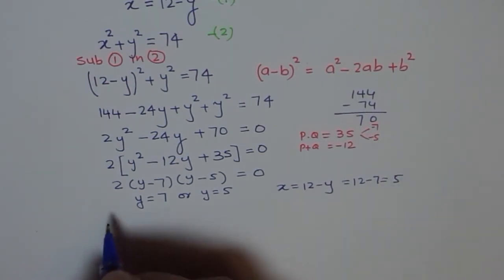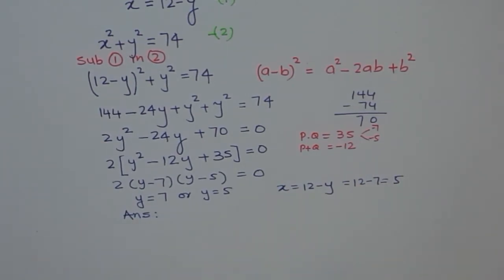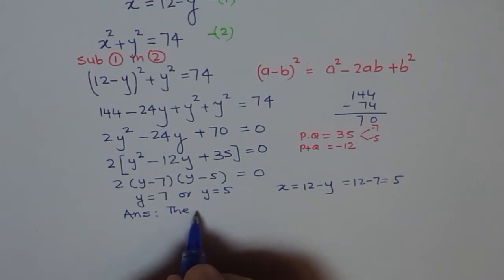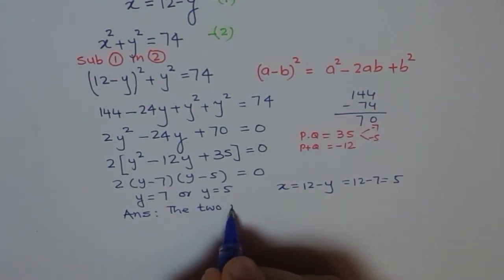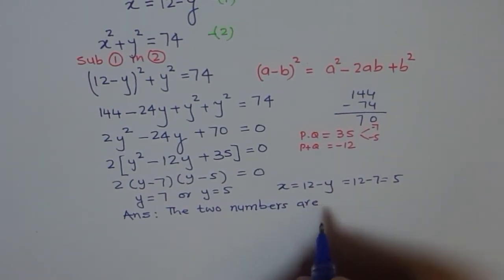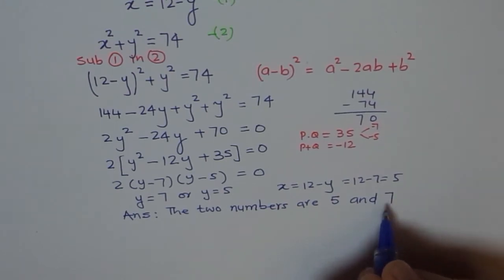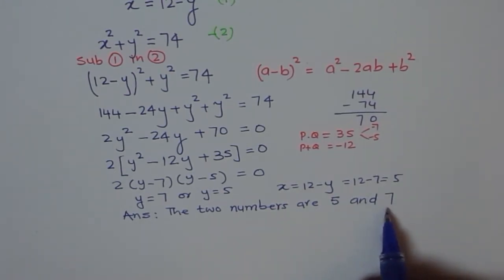So, the 2 numbers which we have is, we can write down the answer as, the 2 numbers are 5 and 7. So, if you add 5 and 7, you get 12. And their squares, 5 square is 25 plus 7 square is 49. If you add 5 square and 7 square, you get 74.